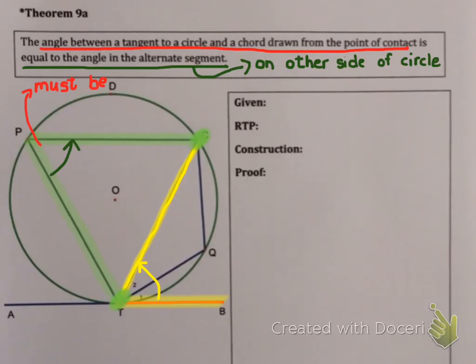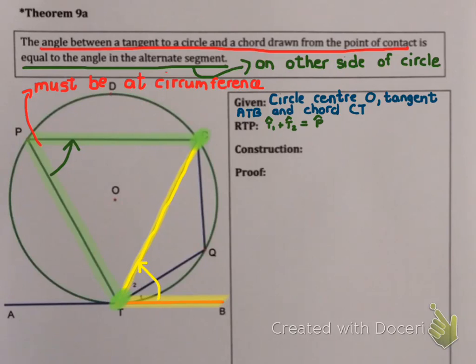And second of all, please can you take a note that this angle must be at the circumference. It can't be an angle in the middle of the circle. It must be at the circumference. Okay, we're given circle with center O and tangent ATB and chord CT. That's what we're dealing with. We're apparently trying to prove that angle T1 plus angle T2 is the same as angle P.